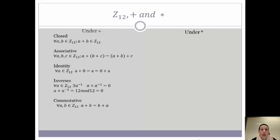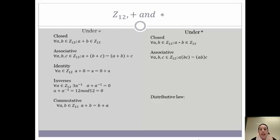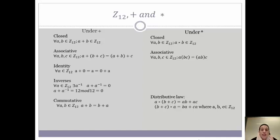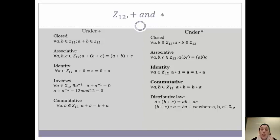Now we have to check under multiplication. We must check that we are closed and associative, which holds in much similar ways to what we just proved with addition. And we must check that the distributive law holds: A times the quantity B plus C equals AB plus AC, and on the right side as well. So now we can say that Z12 is a ring. We do in fact have a multiplicative identity which is 1, so we can say we are a ring with identity. And we are also commutative in Z12 under multiplication, so we can say that we are a commutative ring with identity or a commutative ring with unity.